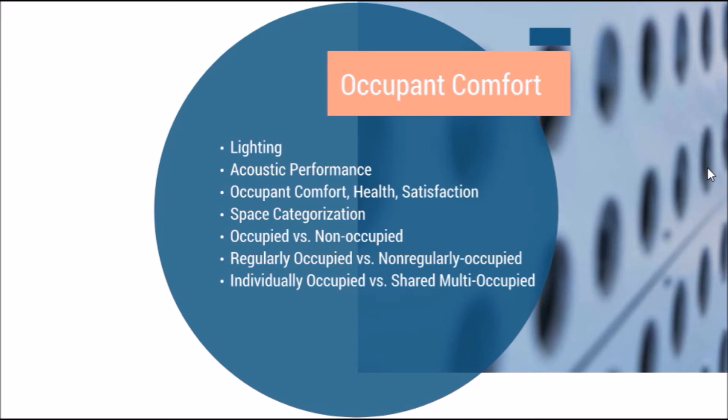Provide thermal comfort under ASHRAE 55 standards. 71 degrees is considered to be the most efficient temperature at which people can work and be most productive — that's important to know. Provide thermal comfort controls to 50% of building occupants. Improve views to give people a connection with the outdoors — this comes along with daylighting and should provide a clear image of the outdoors with no tints or anything like that.